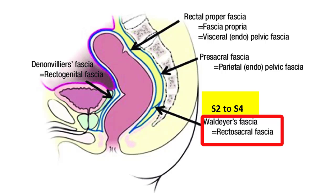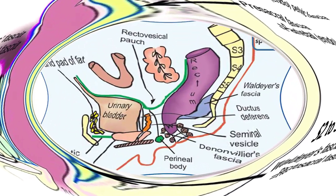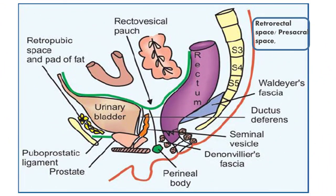Waldeyer's fascia is also called recto-sacral fascia: 'recto' because it fuses with the visceral fascia of the rectum, and 'sacral' because it originates from the pre-sacral fascia at S2, S3, and S4 levels. It divides the retro-rectal space into superior and inferior compartments. It is very tough tissue that attaches the rectum to the endopelvic fascia at S4, with great clinical significance in rectal cancers.